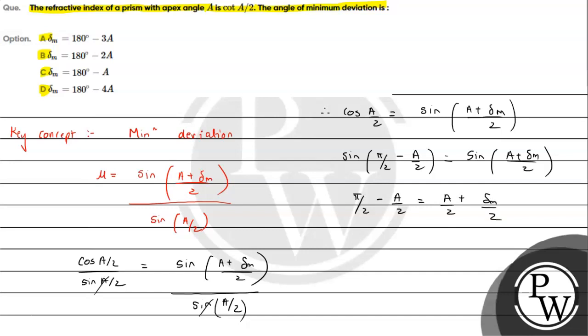We are interested in calculating δₘ. Solving the equation, we get δₘ = π/2 - A.